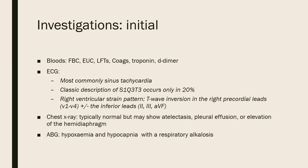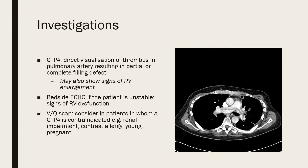The chest X-ray is typically normal, but there may be atelectasis, pleural effusion, or elevation of the hemidiaphragm. The ABG typically shows hypoxemia and hypocapnia with a respiratory alkalosis. The hypoxemia occurs because lung tissue isn't receiving deoxygenated blood for gas exchange, and the hypocapnia results from increased respiratory rate breathing off CO2, which produces the respiratory alkalosis.